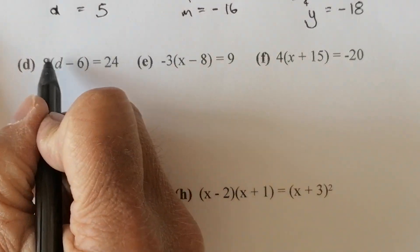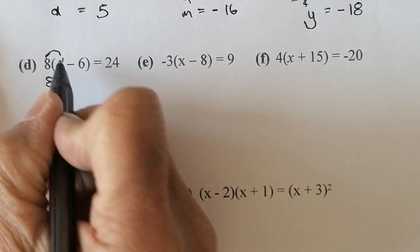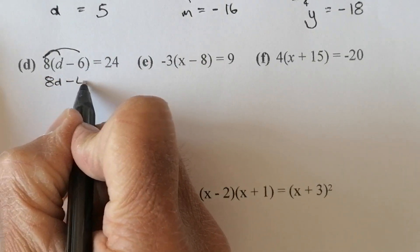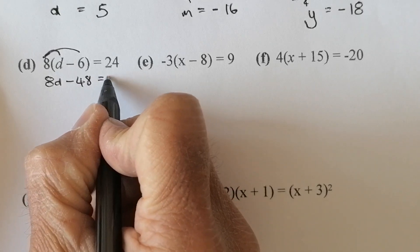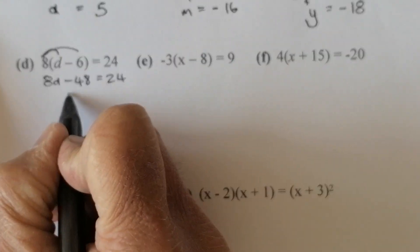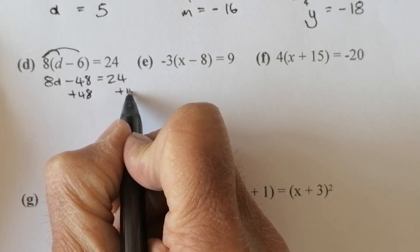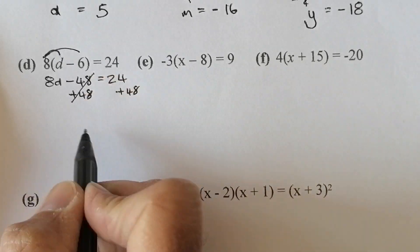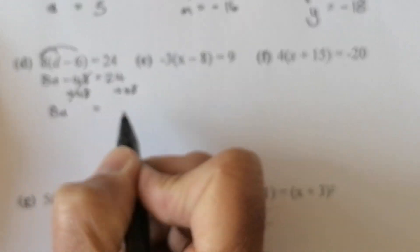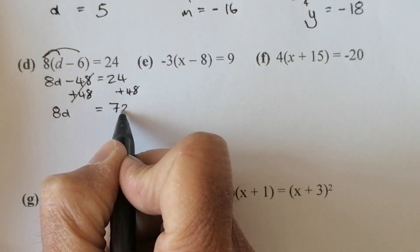Multiplying the brackets out again. So 8 times d gives me 8d. 8 times minus 6 gives me minus 48, and that equals 24. I'm going to add 48 to the left-hand side and also the right-hand side to eliminate that number. That leaves me with 8d equal to 72 on the right.